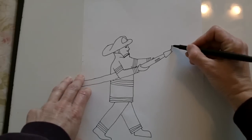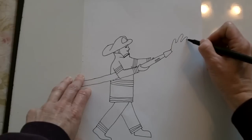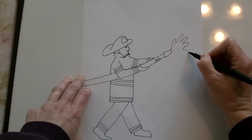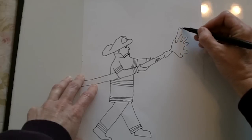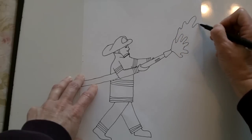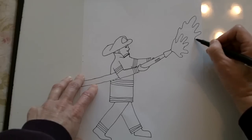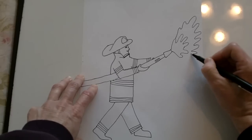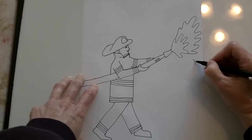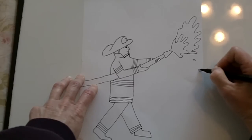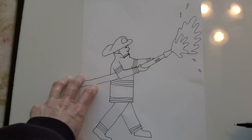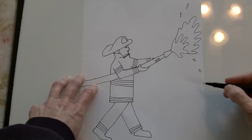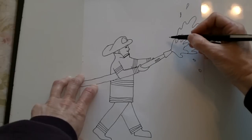Now out of the hose there's water coming out like that. And then some more water coming out with some drips off to the side like that.